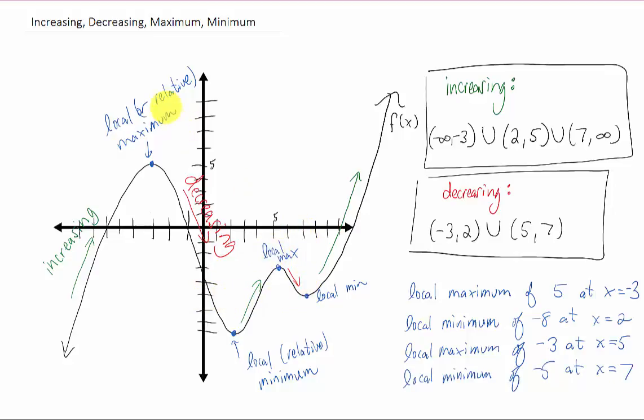We call these local or relative maxima and minima, or local or relative extrema, not because they're the largest or smallest values on the function, but because they're the largest and smallest values in the region around that point. So while this certainly isn't the absolute maximum of the function, it is higher than all the points right around it, so we call it a local maximum.